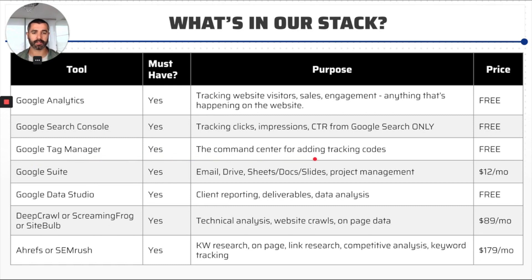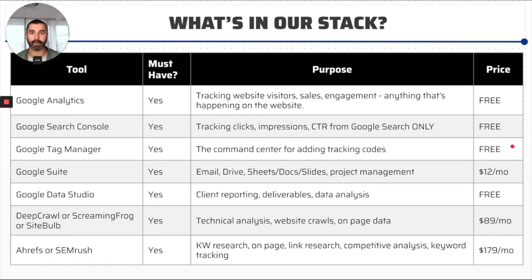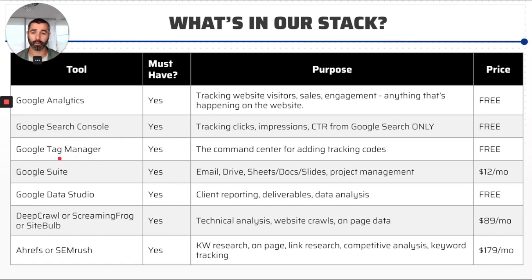Google Tag Manager is the next one up. Basically, it's the command center for adding tracking code. A lot of these platforms require you to put a piece of JavaScript on your website, which injects itself throughout your site and allows analytics platforms to track what's happening. Google Tag Manager is a free tool that allows you to copy and paste these tags to get other tracking platforms set up really easily. It's also a great way to do some advanced things with SEO, like tracking schema, which we'll talk about much later in the course.